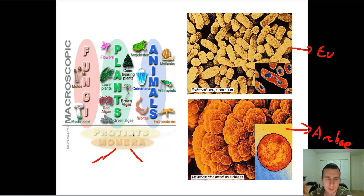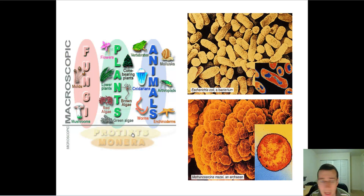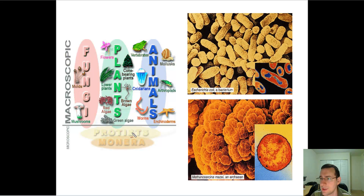Although archaeabacteria seemed to be a more ancient group on the tree of life, and eubacteria seemed more advanced, the archaea were actually more similar to the protists than eubacteria were. In other words, even though eubacteria were considered more advanced bacteria, the protists actually came from the ancient type of bacteria. That was surprising — one would expect that advanced cells came from the advanced kind of bacteria, but that's not the case.